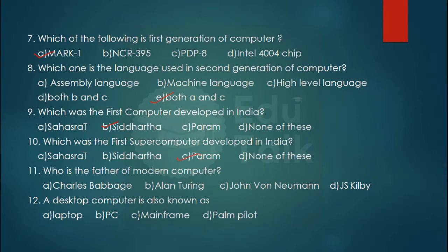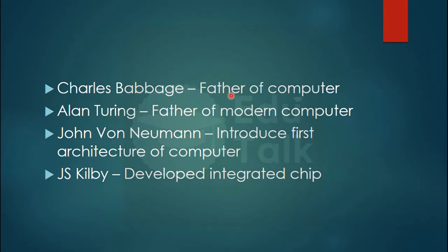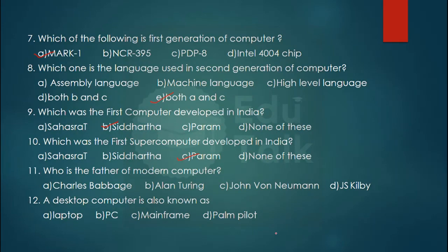Who is the father of modern computer? Charles Babbage and Alan Turing are options. John Von Neumann introduced first architecture of computer and J.S. Kilby developed integrated chip. The answer is option B, Alan Turing. A desktop computer is also known as PC, that is personal computer.